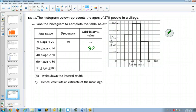So, the next one, the mid value is 30, and frequency is 70, mid value is 50, and the frequency is 100. Between 60 and 80 is 50, and between 80 and 100 is 10. Now, if you added up those frequencies, they add up to 270, because there was 270 people in the village.